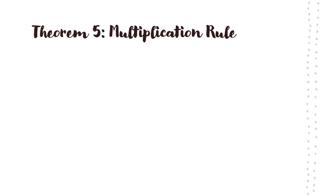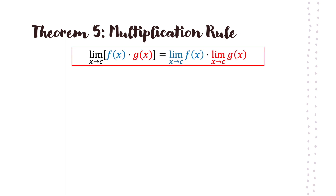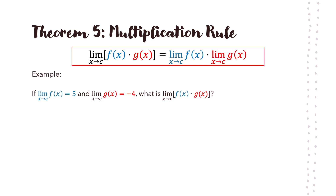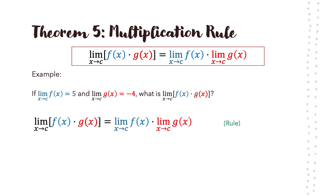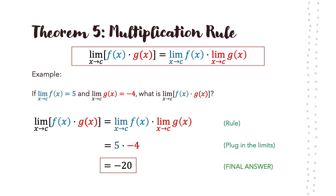The next one is the multiplication rule. If you have the limit of f(x) times g(x) as x approaches c, that equals the limit of f(x) as x approaches c, times the limit of g(x) as x approaches c — just like addition-subtraction, you break up the functions into separate limits. For example, if the limit of f(x) equals 5 and the limit of g(x) equals negative 4 as x approaches c, you apply the rule, plug in the values, and the limit is negative 20.